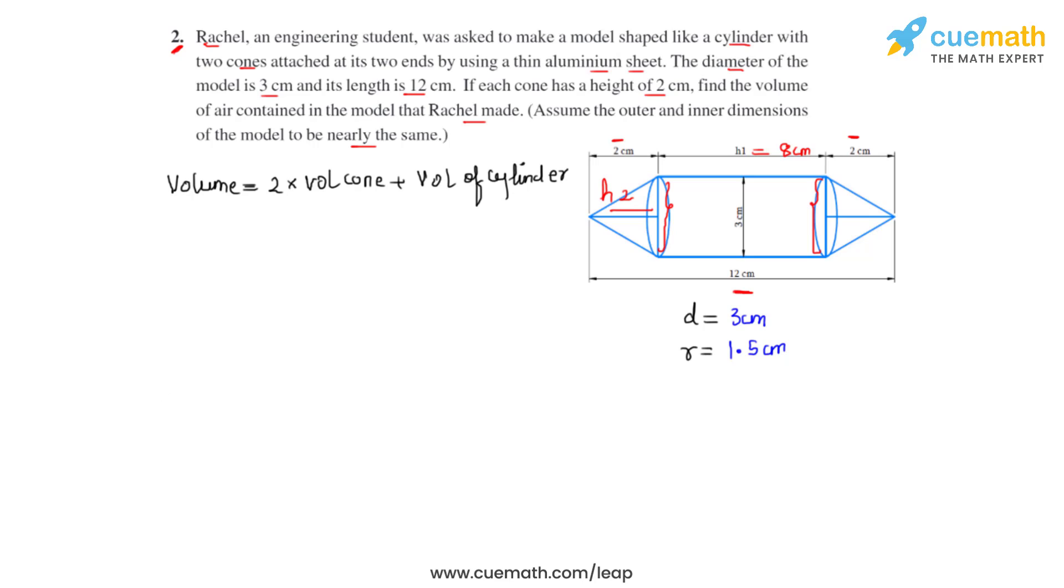Now we'll substitute the formulas for each of these. The formula to find the volume of a cone is 1/3 πr²h. Here we write it as 2 times 1/3 πr²h2, as h2 is the notation for the height of the cone. Plus the volume of cylinder, which is πr²h1. Now we can take πr² common and we are left with 2/3 h2 plus h1.